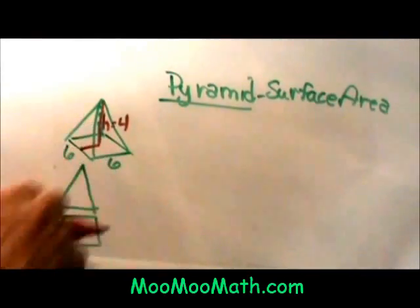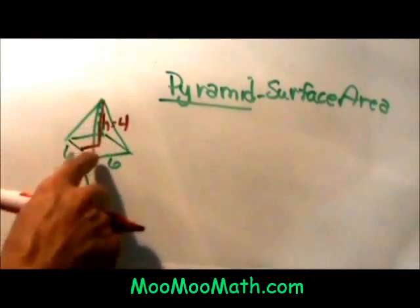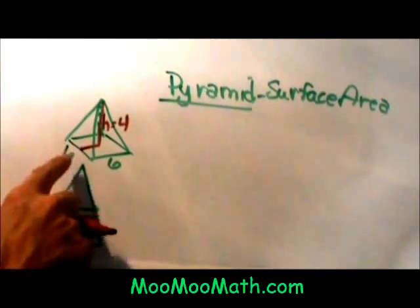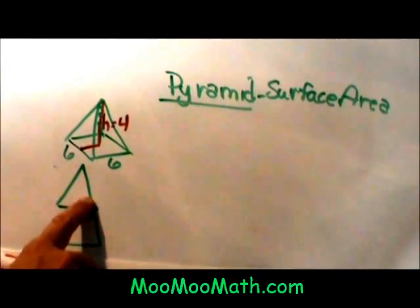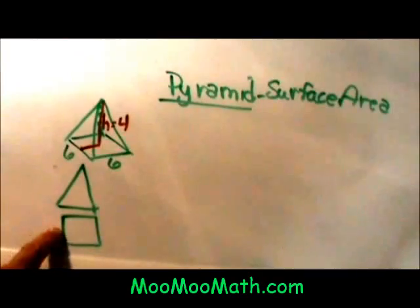We are going to take this pyramid and divide it up. The face of each side of the pyramid is a triangle and the base of the pyramid is a square. I have separated those out.